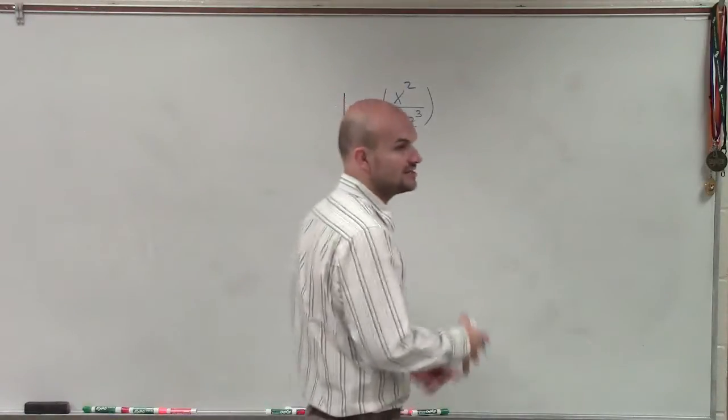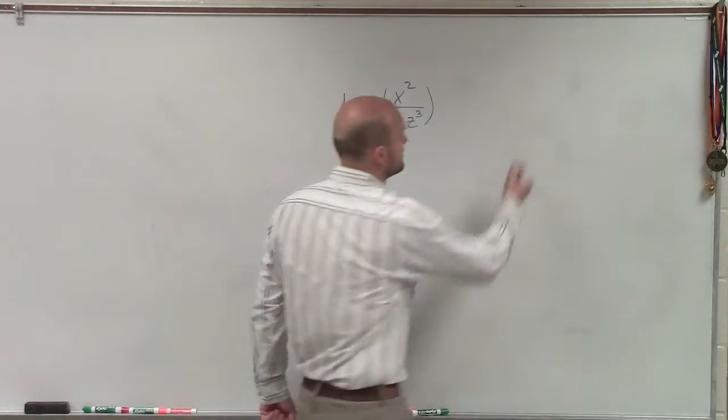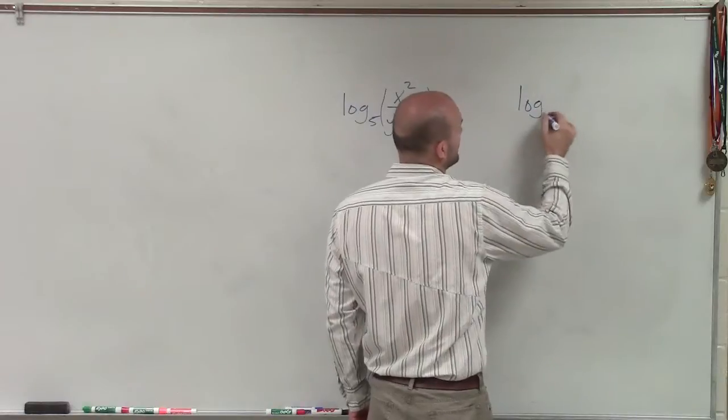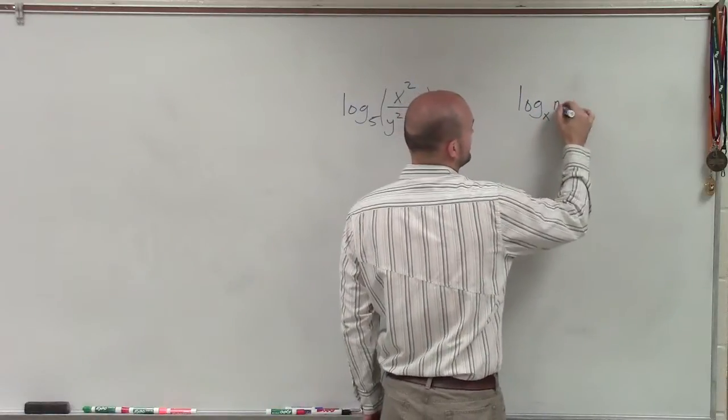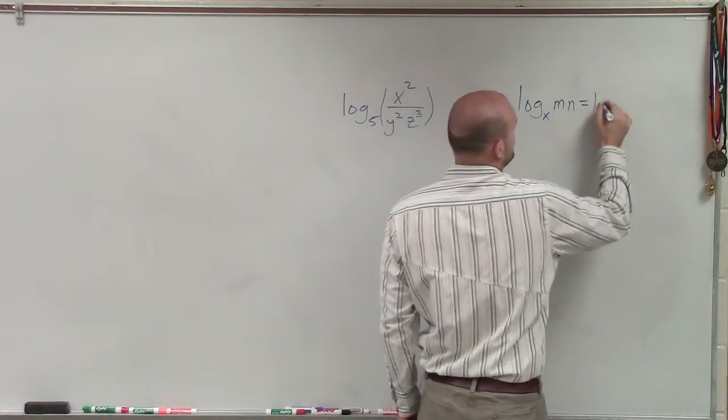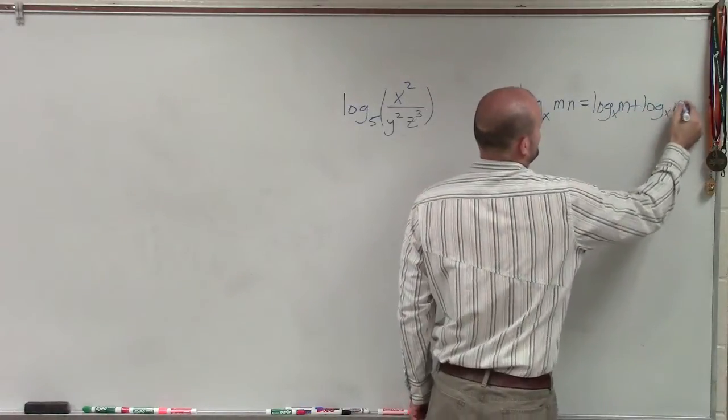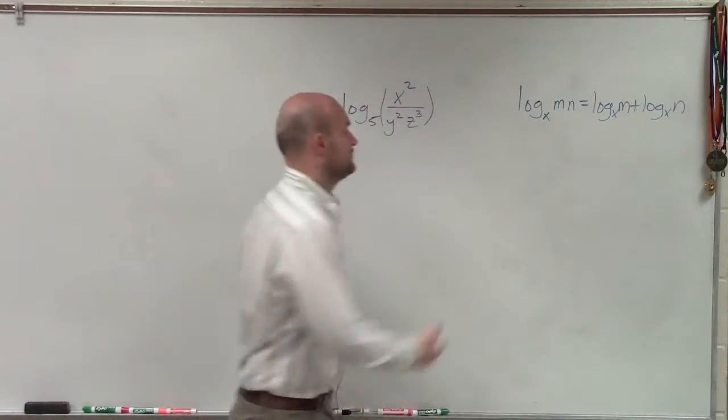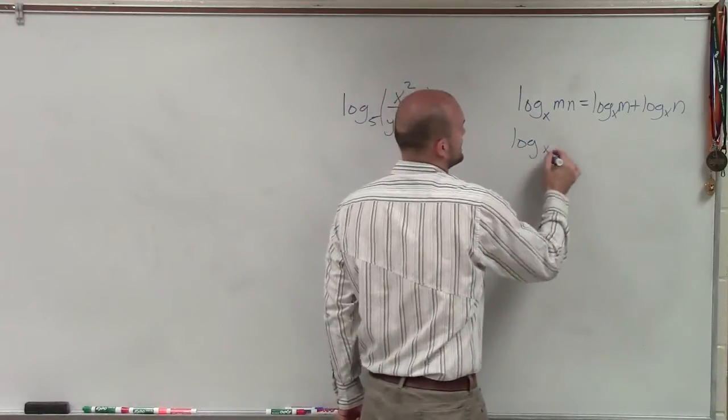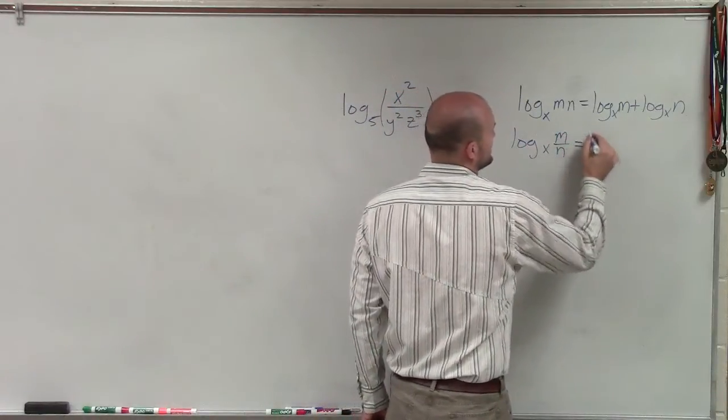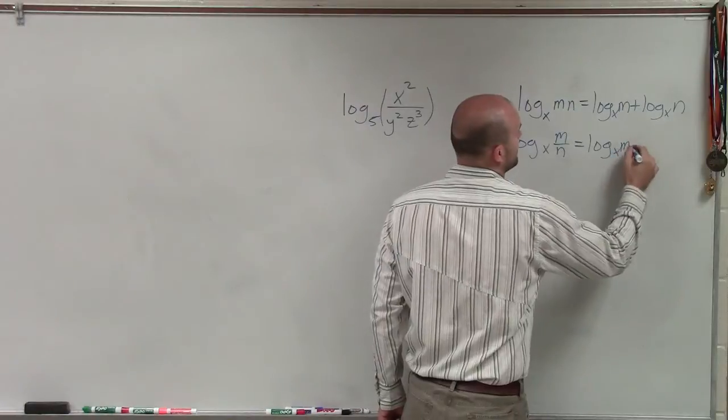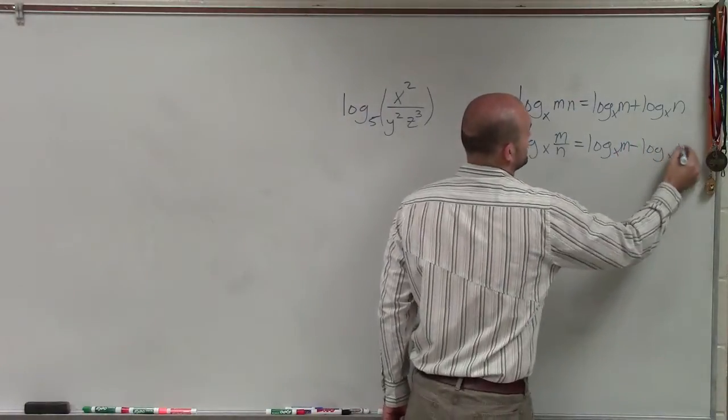So there's a couple of the rules that we talked about as far as expanding and condensing. I'll just have log base x of mn is equal to log base x of m plus log base x of n. If you have log base x of m divided by n, that's equal to log base x of m minus log base x of n.